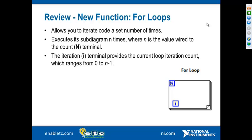We also talked about a structure called the for loop. In the very first webinar, we went through the while loop, which allows you to run code until a condition is true or false. For loops are different — they're used to execute a sub-diagram N times, where N is the value wired into the count terminal. Both loops have an iteration terminal providing the current count, and a common stumbling point is remembering that it gives a value of zero the first time through and one the second time.